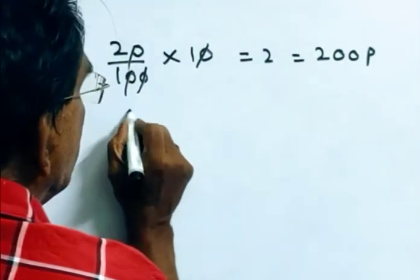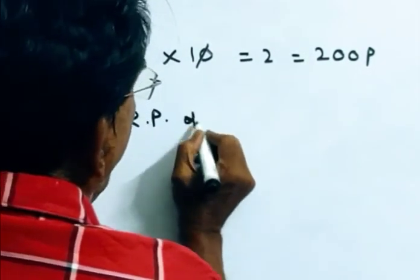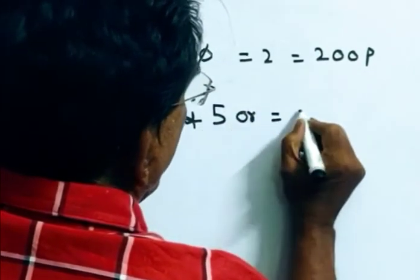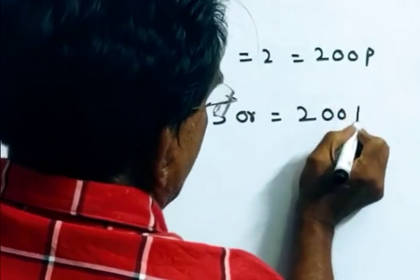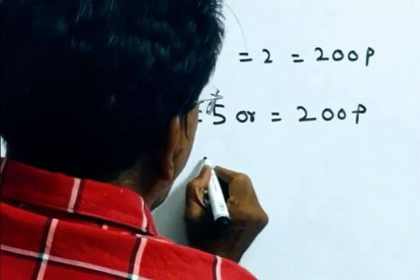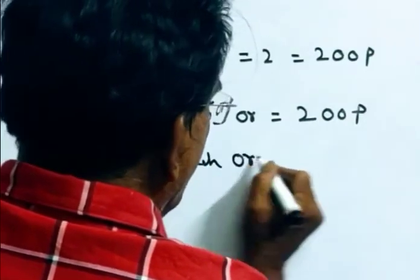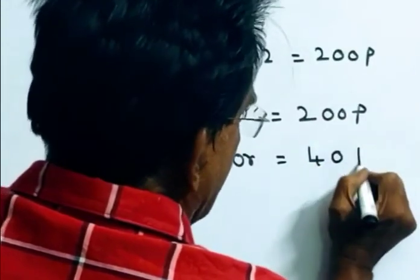So, reduced price of 5 oranges is equal to 200 pies. Each orange's reduced price is equal to 40 pies.